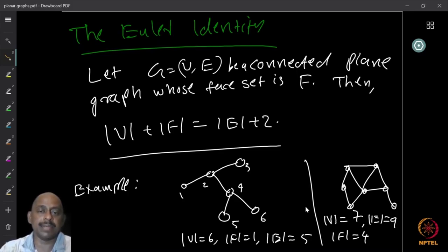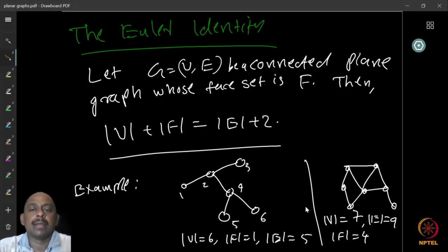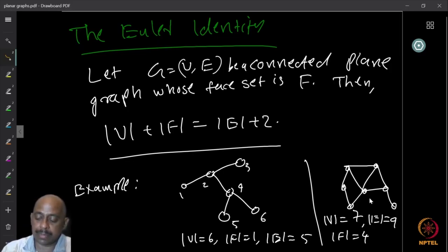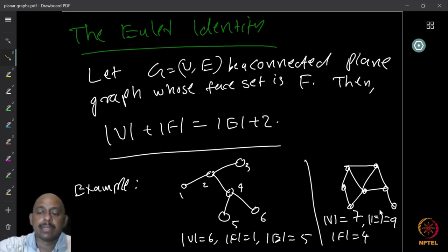For example, if you take any tree there is only one face. The number of vertices is 6, number of edges is 5, and the identity holds. Similarly, for another graph with 7 vertices, 4 faces, and 9 edges, the identity also holds.